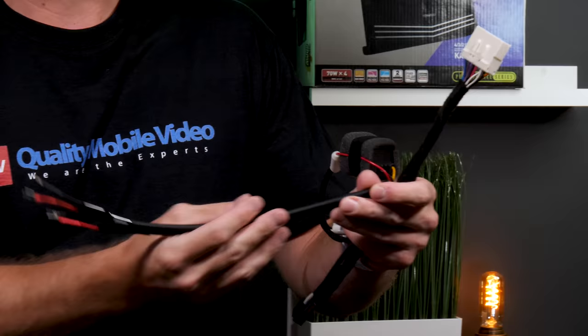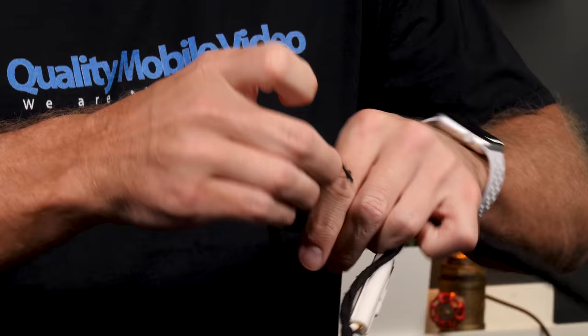First thing we're going to do is solder up two of our speaker leads from the amplifier to our front speakers. To get started, we'll untape our harness.